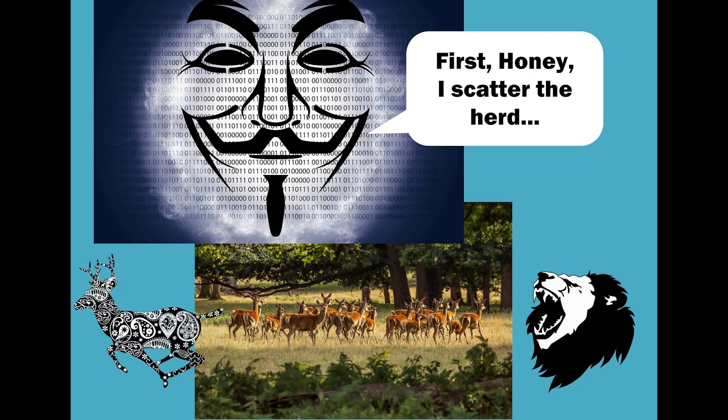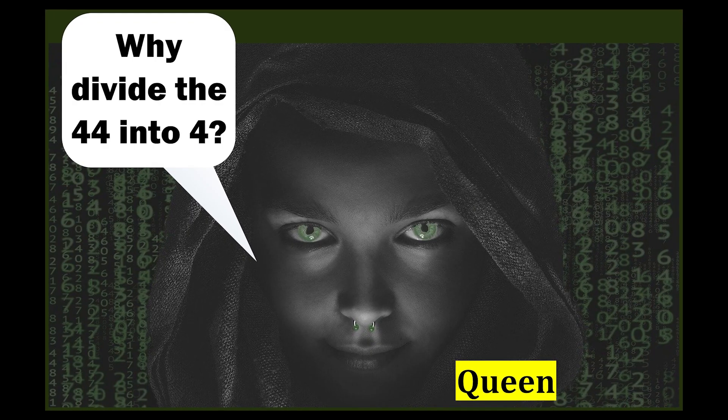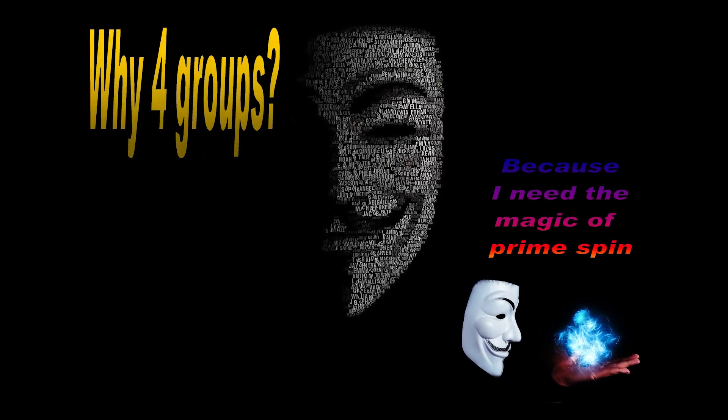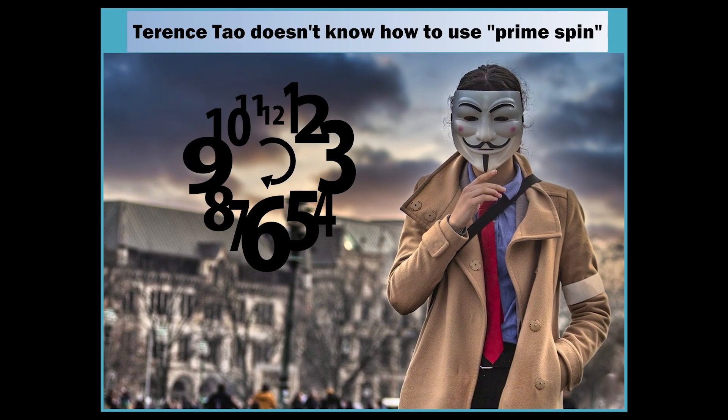First, honey, I scatter the herd. My 44-digit dinner is going to be in group number 2, from 12 to 22 digits. Why divide the 44 into 4? Why 4 groups? Because I need the magic of prime spin. Terrence Tao doesn't know how to use prime spin.